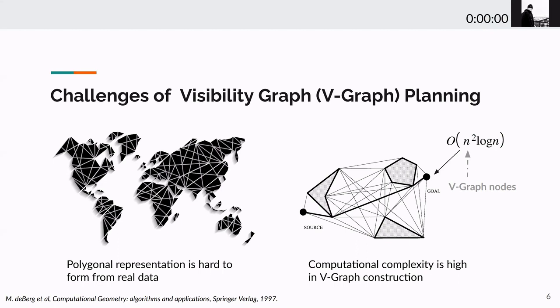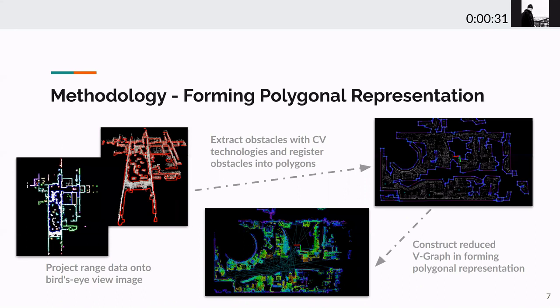Let's see how we work it out. As we said, the first challenge is to form polygon representation from real sensor data. To tackle this challenge, we first project the range sensor data, here a point cloud, onto a bird's-eye view image. Then, we use computer vision methods to extract edge points on obstacle boundaries between the obstacles and the free space. We select a subset of edge points to form closed polygons. When forming the polygons, we use the internal angle criteria to set a polygon resolution.